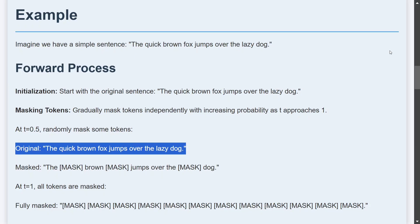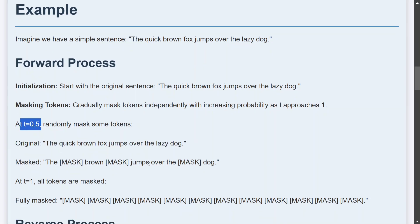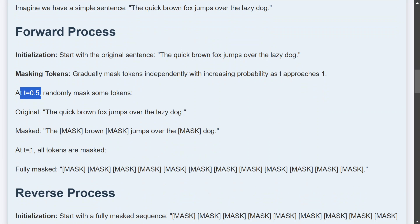Assume at midway t equals 0.5, half of the tokens are now masked. At t equals to 1, the end where the image gets completely distorted, in case of LLDMs the entire text gets masked: mask mask mask mask, as you can see.